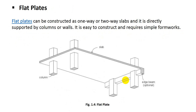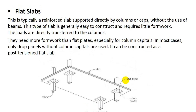Flat plates can be constructed as a one-way or two-way slab. They are directly supported by columns or walls and are easy to construct, requiring simple formwork. Flat slabs are typically a reinforced slab supported directly by columns or column caps, without the use of beams. This type of slab is generally easy to construct. Loads are directly transferred to the columns. They need more formwork than flat plates, especially for column capitals. In most cases, only drop panels without column capitals are used. It can be constructed as a post-tensioned flat slab.